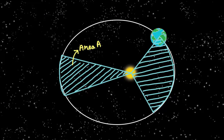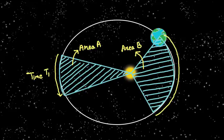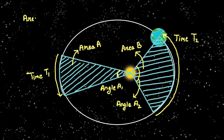So if the earth covers area A at a position far away from sun and it covers area B at a position near to sun, both in the same time interval, then the angle A1 will be less than angle A2. So the earth will travel faster when it is covering area A2.